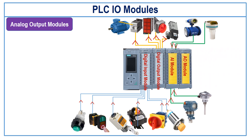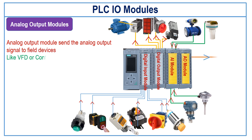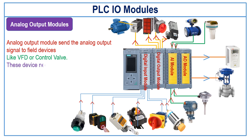Analog output module: The analog output module sends a continuous analog output signal to the field devices like VFD or control valve. These devices need an analog signal to operate. If you have to control the opening of a control valve, you can control it by giving a 4 to 20 mA analog signal from the analog output module. If the output is 4 mA, the valve will be in fully closed condition, and if the analog output is 20 mA, then the valve will be 100% open. The valve's opening can be controlled anywhere between 0 to 100% by giving the appropriate analog output signal from the analog output module.